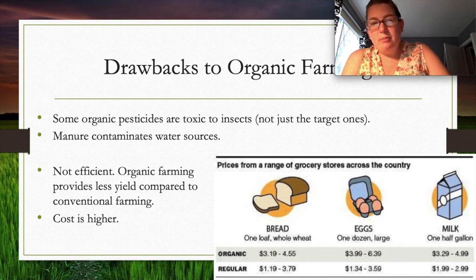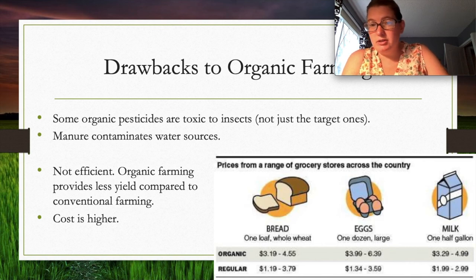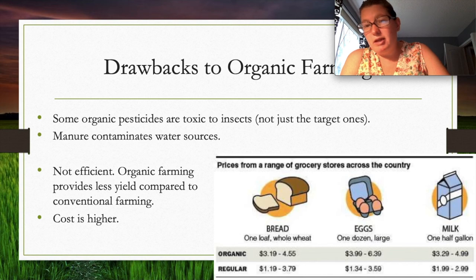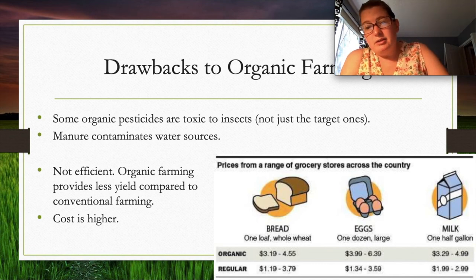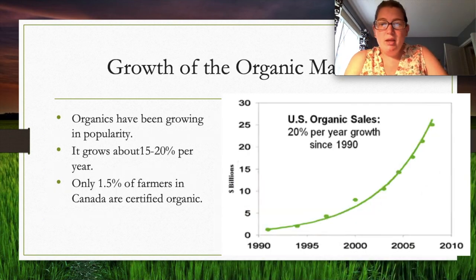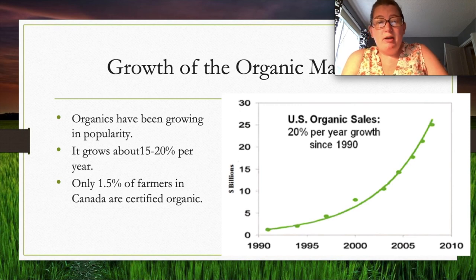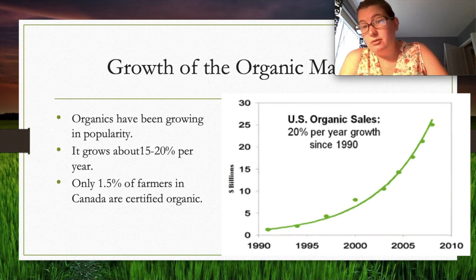Some drawbacks of organic farming include that some organic pesticides are toxic to beneficial insects, not just harmful ones. Manure can contaminate water sources. Organic farms generally have lower yields than conventional farms, making organic food usually about twice as expensive. However, the organic movement is growing about 15–20% per year, though only about 1.5% of Canadian farmers are certified organic — most farms are still corporate.